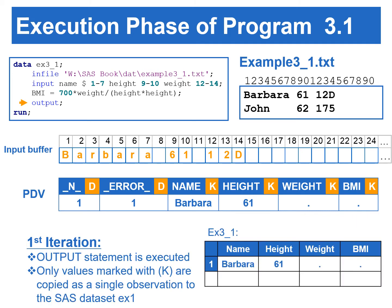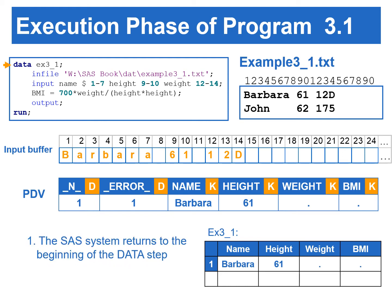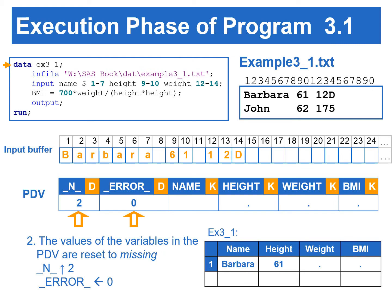When the OUTPUT statement is executed, only the values from the PDV marked with K are copied as a single observation to the output SAS data set. When control reaches the end of the data step, two things happen automatically. First, SAS returns to the beginning of the data step to begin the next iteration. Second, the values of the variables in the PDV are reset to missing. The automatic variable _N_ is incremented to 2, and _ERROR_ is set to 0.